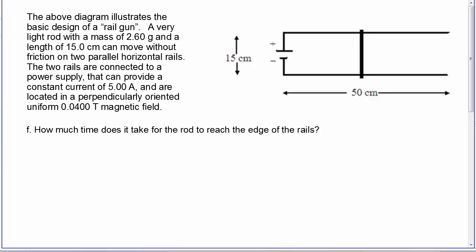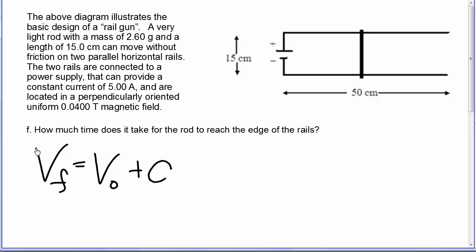In part f, we're being asked how much time it takes for the rod to reach the edge of the rails. We're going to use the equation v final equals v naught plus a times t. v naught is zero, so all we have to do is divide each side by a and solve for t.